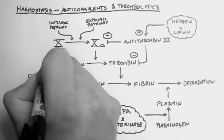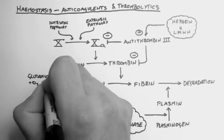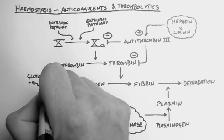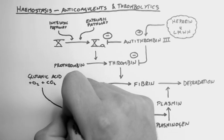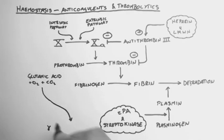In the body, glutamic acid plus oxygen and carbon dioxide can be converted into a weird amino acid called gamma-carboxyglutamic acid.